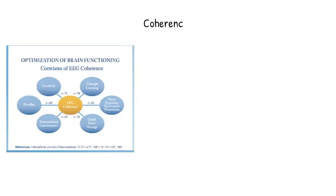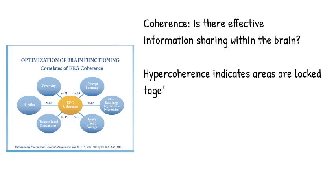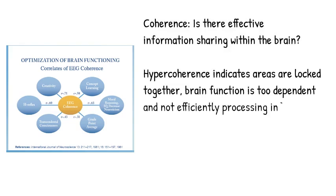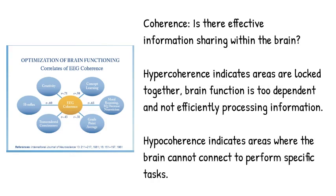The QEEG gives us information about coherence, or how information is being shared within the brain. Hyper coherence indicates areas that are locked together, and hypo coherence indicates areas where the brain is not sharing information.